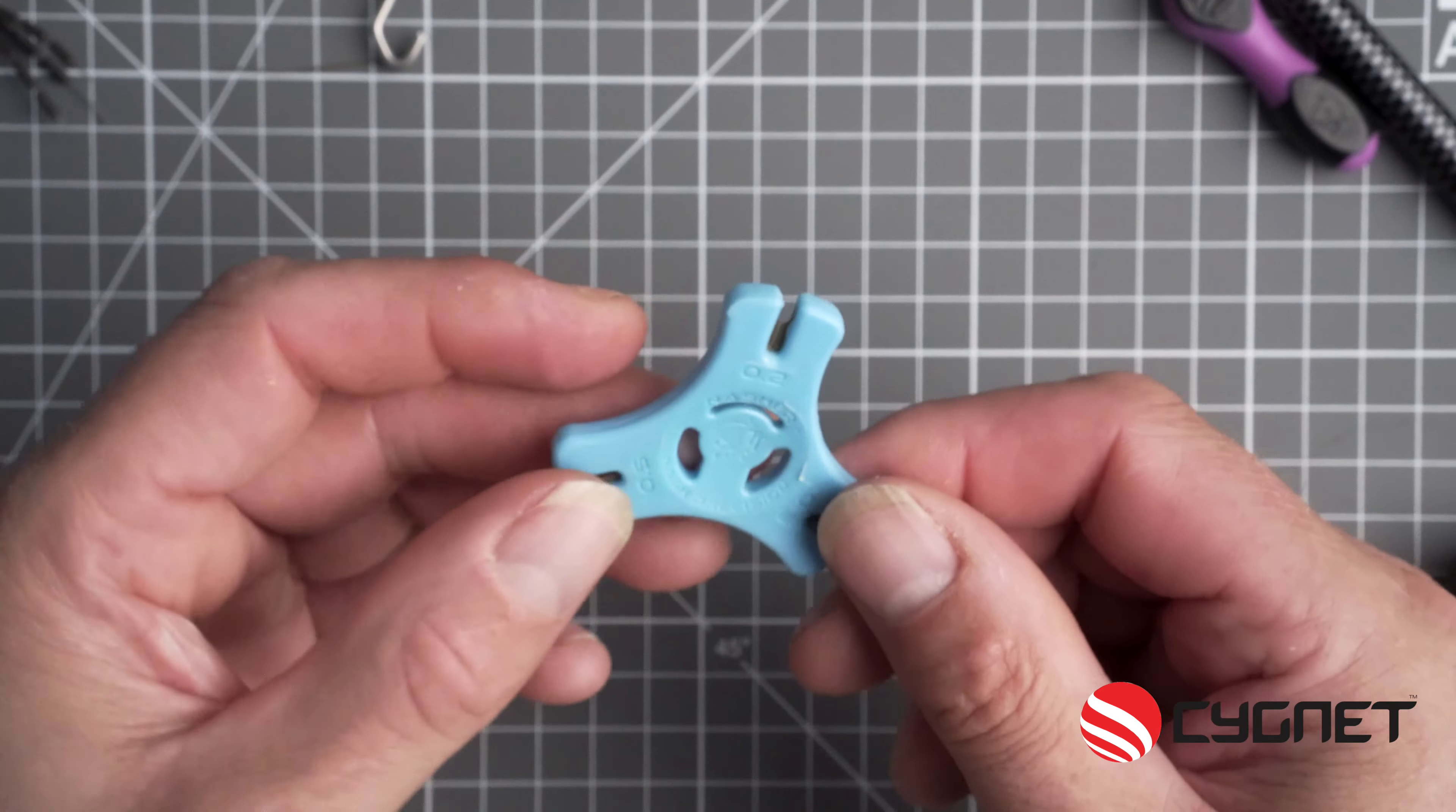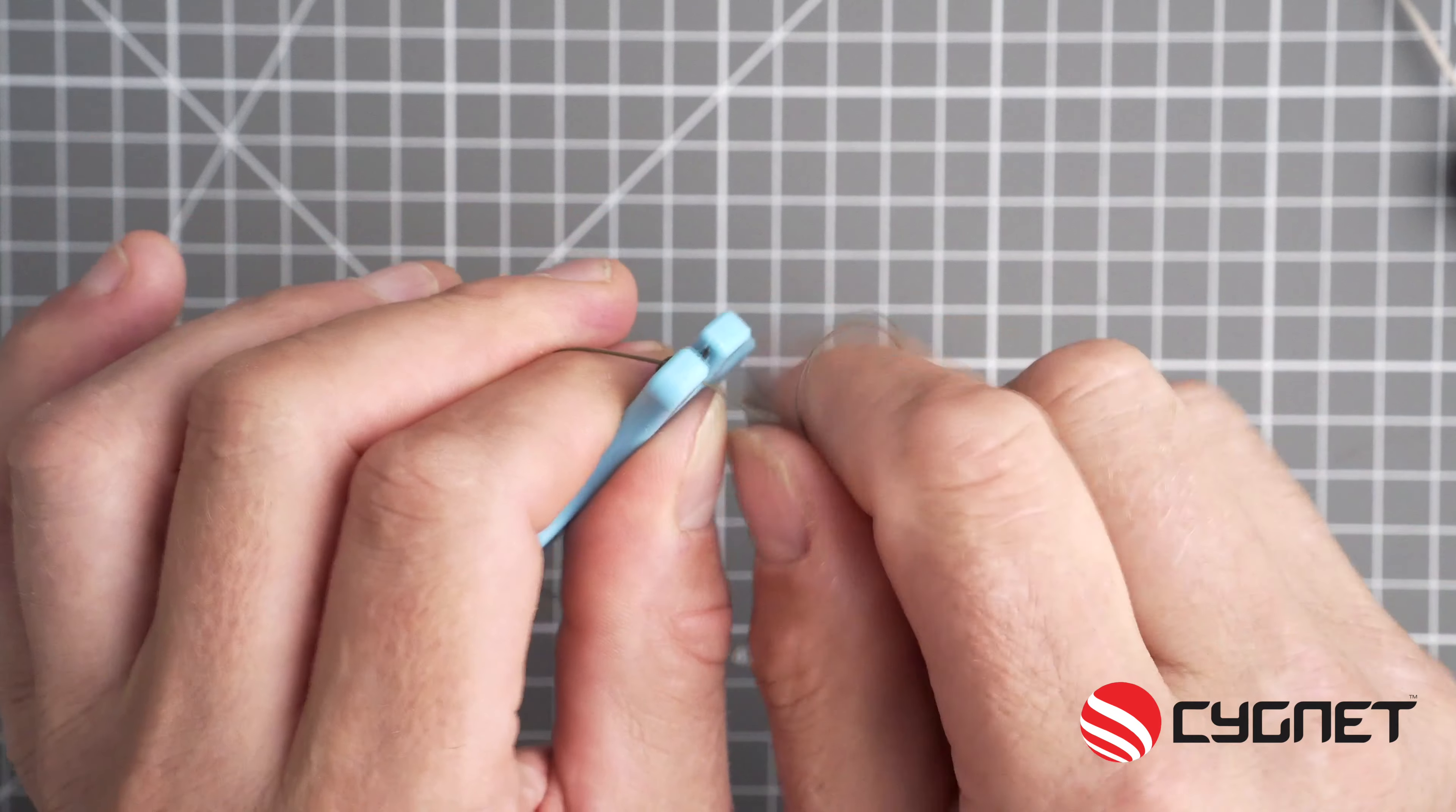Now with the stripper tool, strip off at least four inches of the coating to reveal the braid underneath.